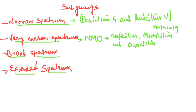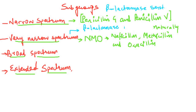There is one important characteristic of these penicillins. The narrow spectrum penicillins are beta-lactamase sensitive, meaning they can be destroyed by bacteria which produce beta-lactamase. But the very narrow spectrum penicillins are beta-lactamase resistant — they will not be destroyed by beta-lactamase-producing bacteria, and hence their antimicrobial activity is specifically against those beta-lactamase-producing bacteria.